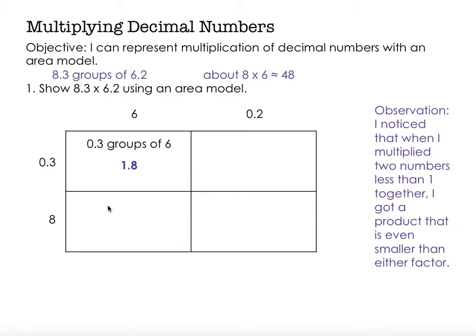Okay, I'm going to move on to this rectangle below it, and I have 8 groups of 6. Well, I know that 8 times 6 is 48.